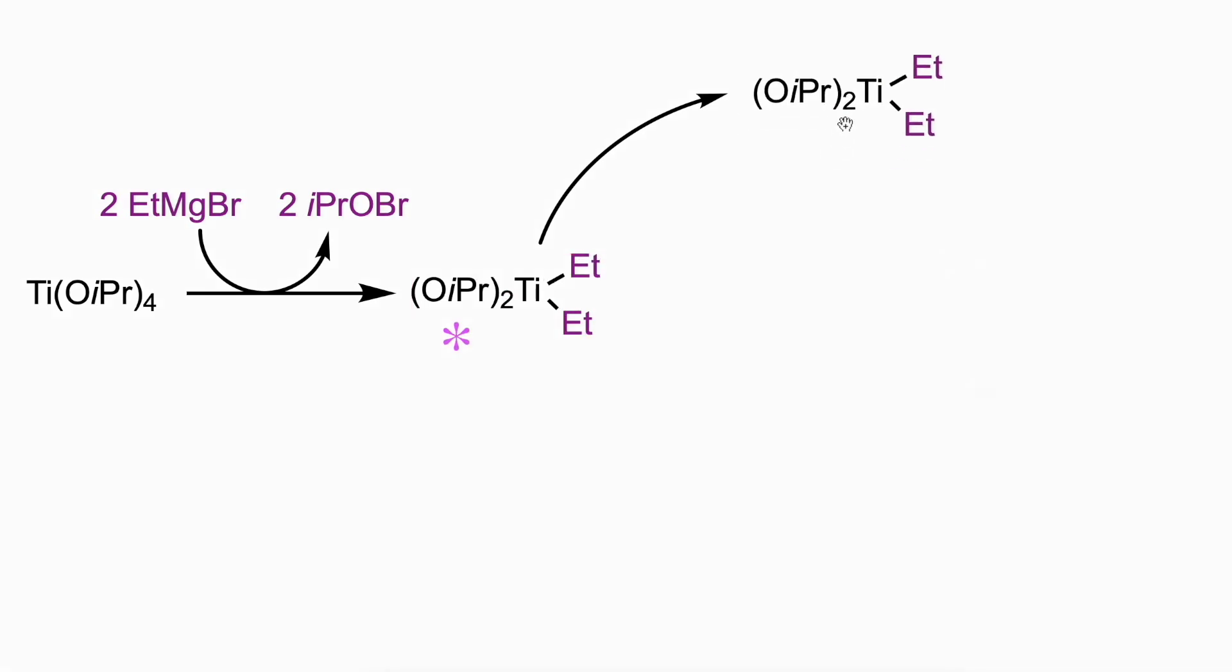This intermediate quickly undergoes a beta-hydride elimination to give ethane and titanacyclopropane.